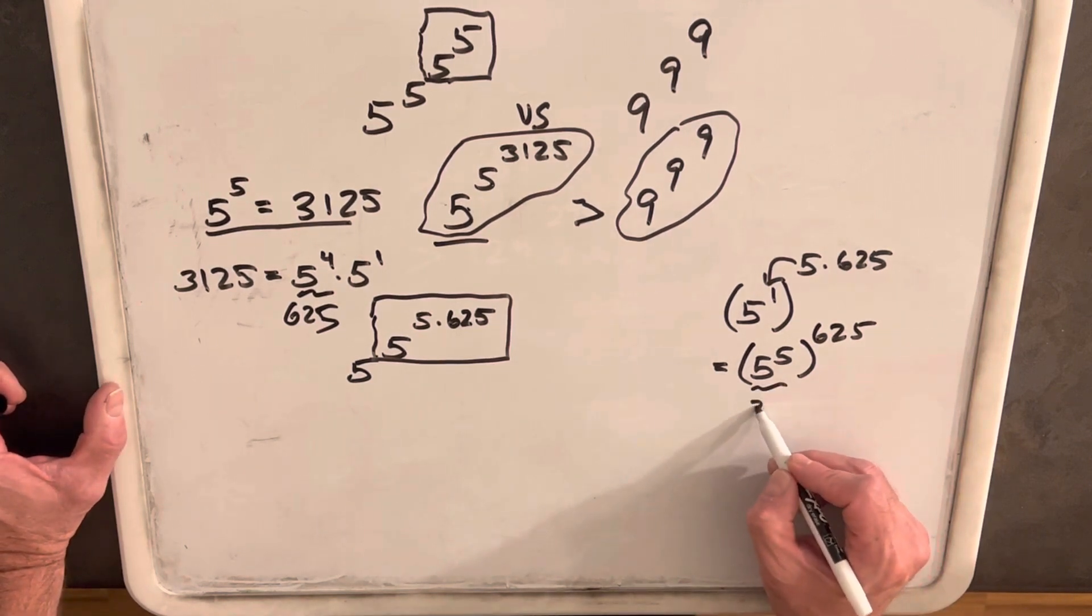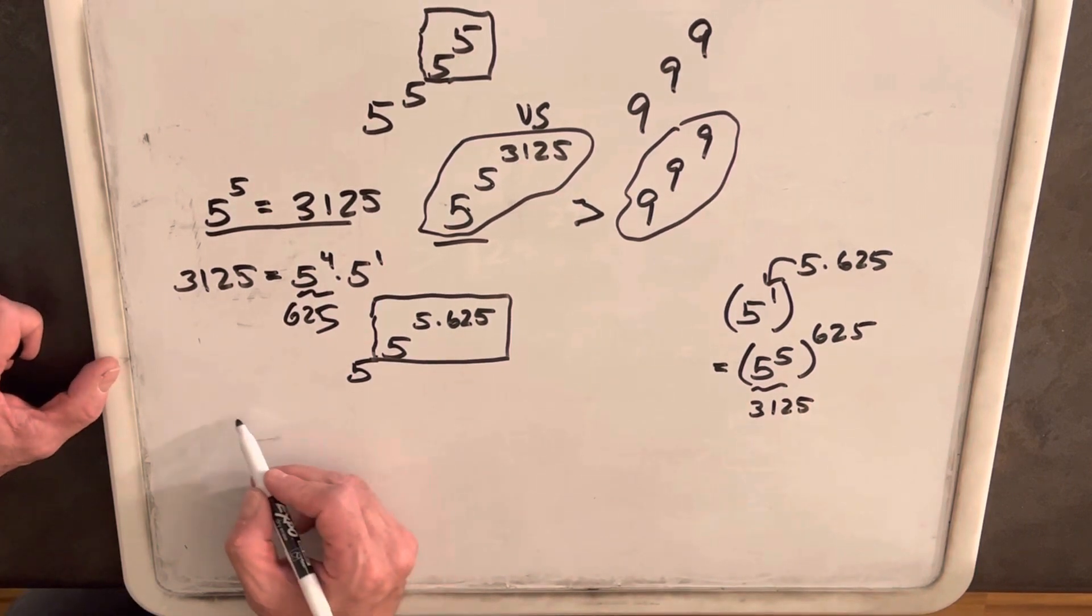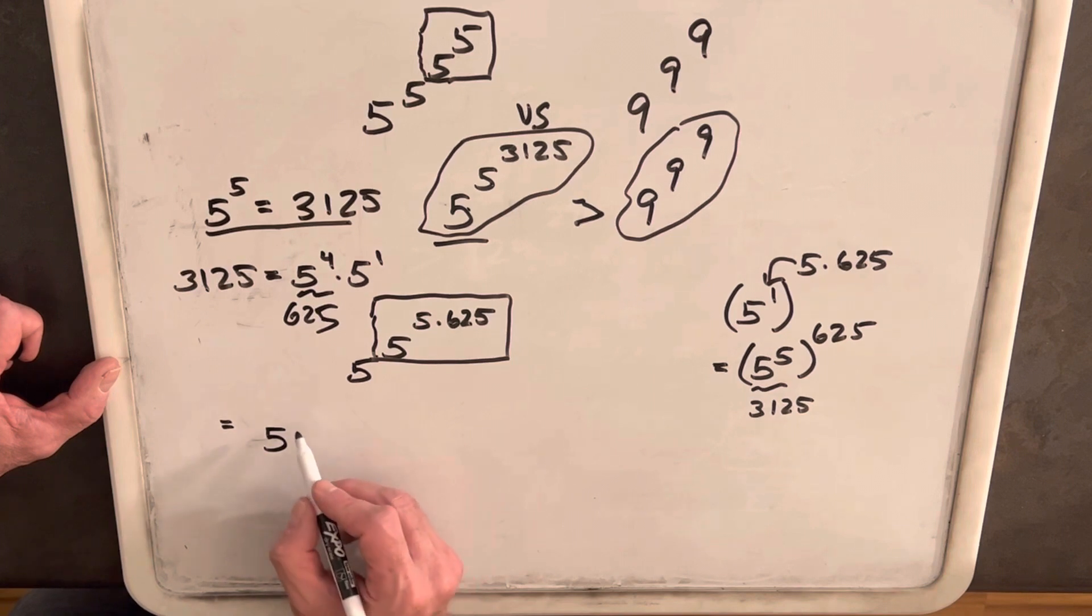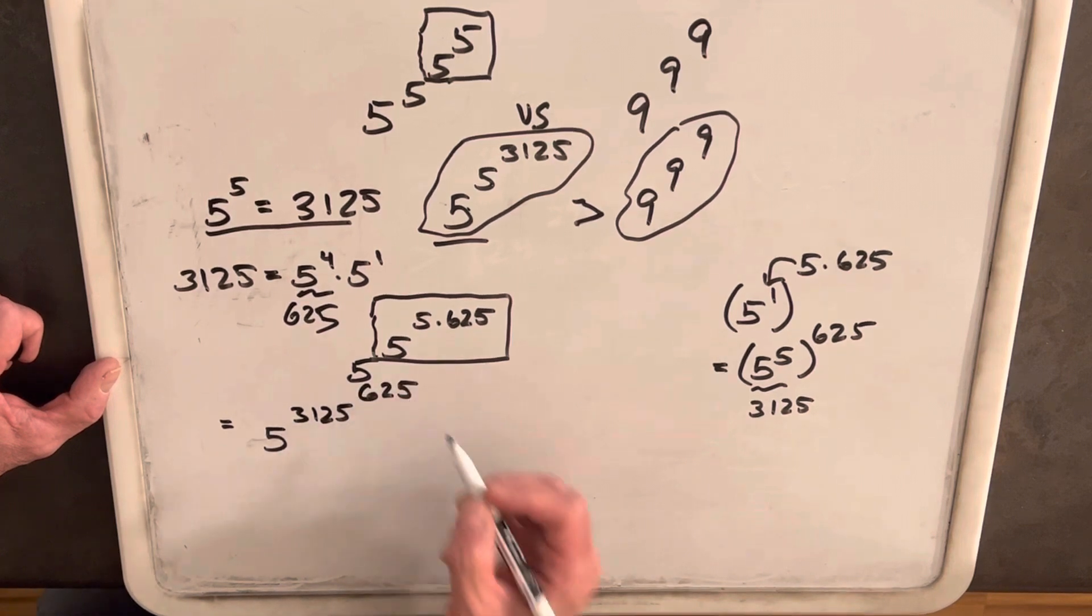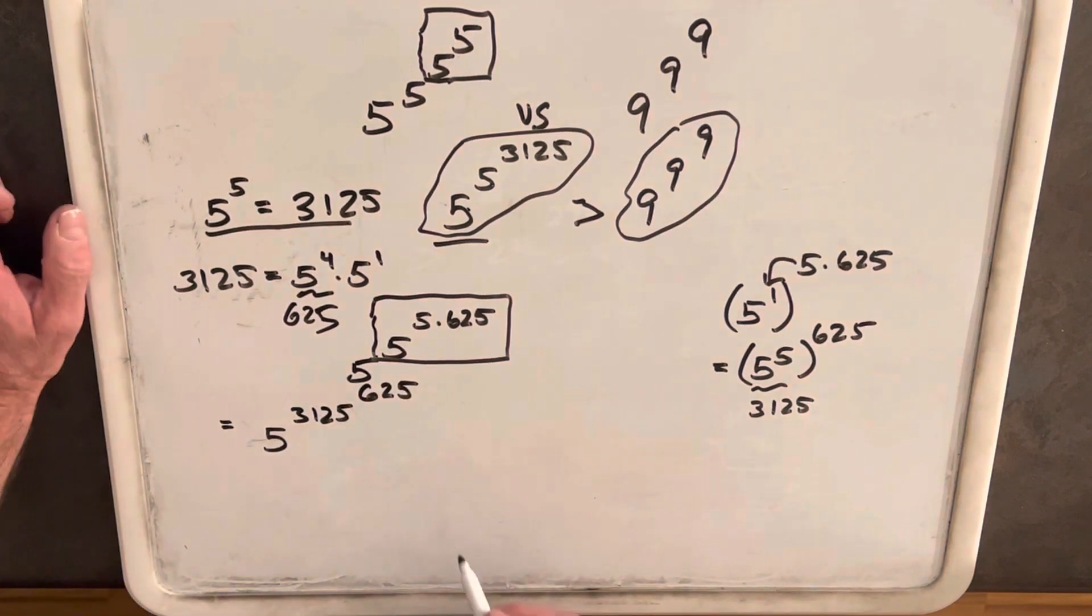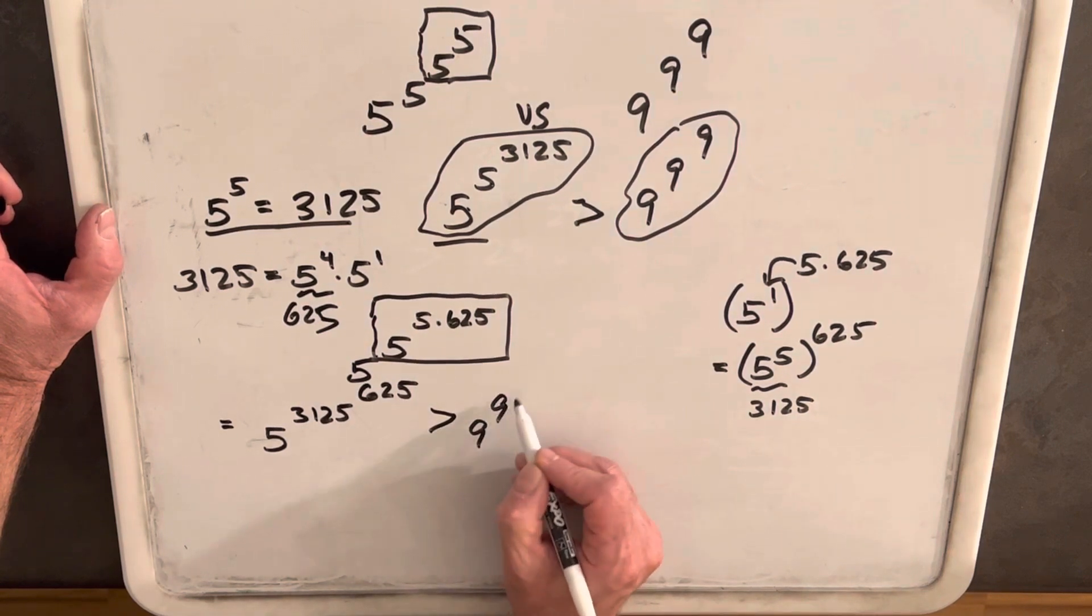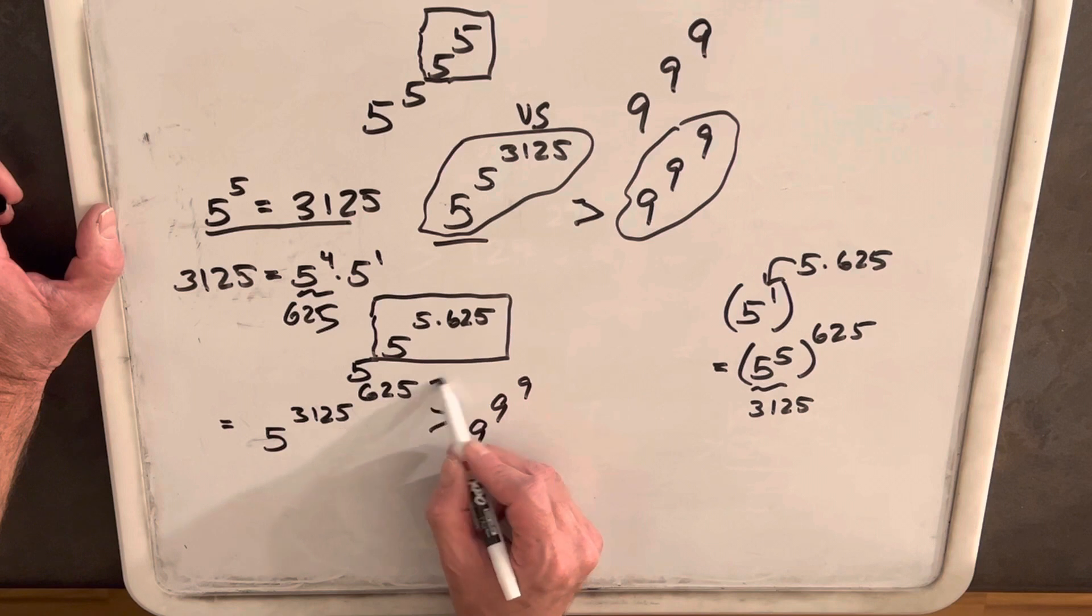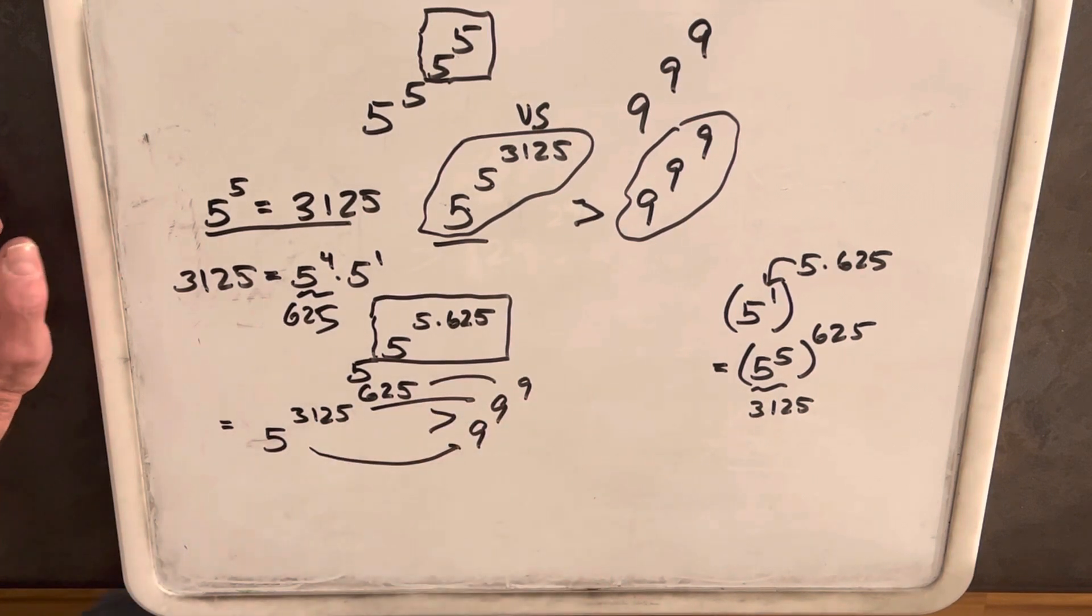With this piece, 5 to the 5, we already stopped with just 3,125. So coming back, rewriting our problem again, we're going to have 5 to the 3,125 to the 625. And again, comparing to 9 to the 9 to the 9, we have this is greater than this, this is greater than this, but this is less than. So we still need to do some more work.